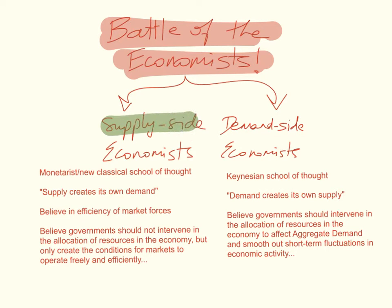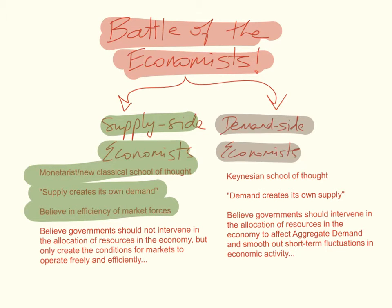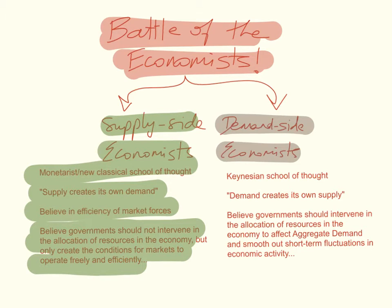There are the supply-side economists and there are the demand-side economists. Supply-side economists are often referred to as the monetarist or the new classical school of thought. They believe that supply creates its own demand, so the economy needs to produce aggregate supply, and that will create the aggregate demand. They believe in the efficiency of market forces, and therefore they believe governments should not intervene in the allocation of resources, but rather create the conditions for markets to operate freely and efficiently.